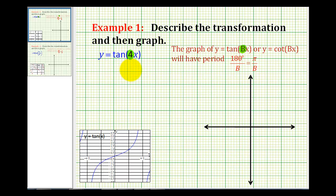Since the period of the basic tangent function is pi radians, the period of this function is going to be pi divided by four. So the period is equal to pi divided by b. But in this case, it's just pi divided by four.